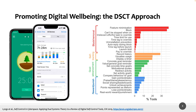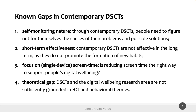In the first part of this course we have seen that the traditional approach to support people's digital well-being is by means of digital self-control tools. We analyzed the main characteristics and features of these tools, but we also understood there is a list of gaps and limits. The first main limit is their self-monitoring nature: people need to figure out for themselves both the causes of their problems and possible solutions, like autonomously deciding the correct threshold for a usage timer. The result is that these tools have only short-term effectiveness.